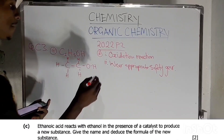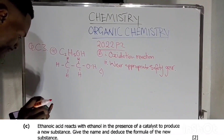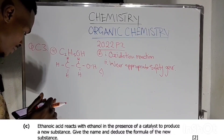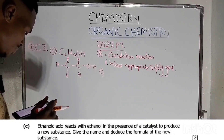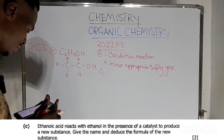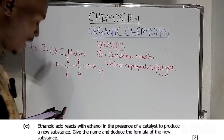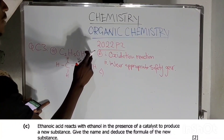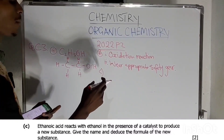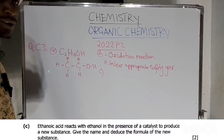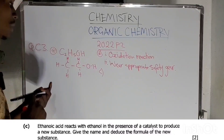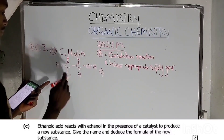Question C: Ethanoic acid reacts with ethanol in the presence of a catalyst to produce a new substance. Give the name and deduce the formula of the new substance. When ethanol reacts with ethanoic acid, the product will be an ester and the reaction is called esterification.